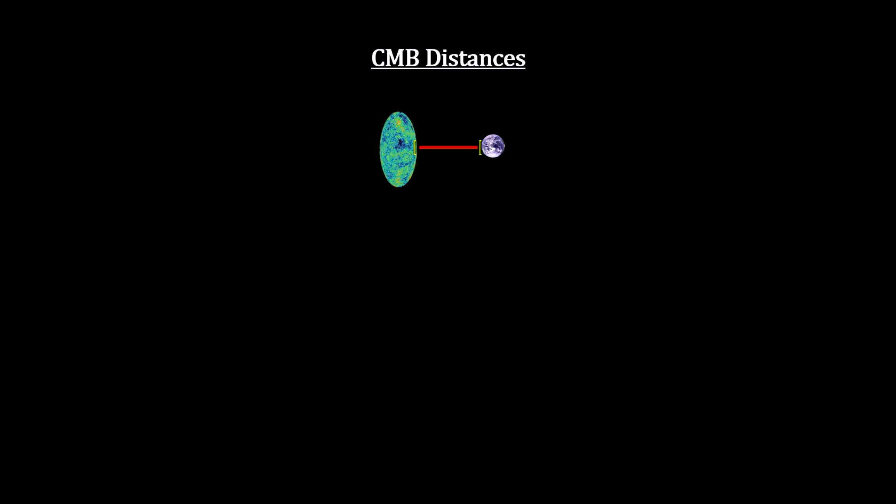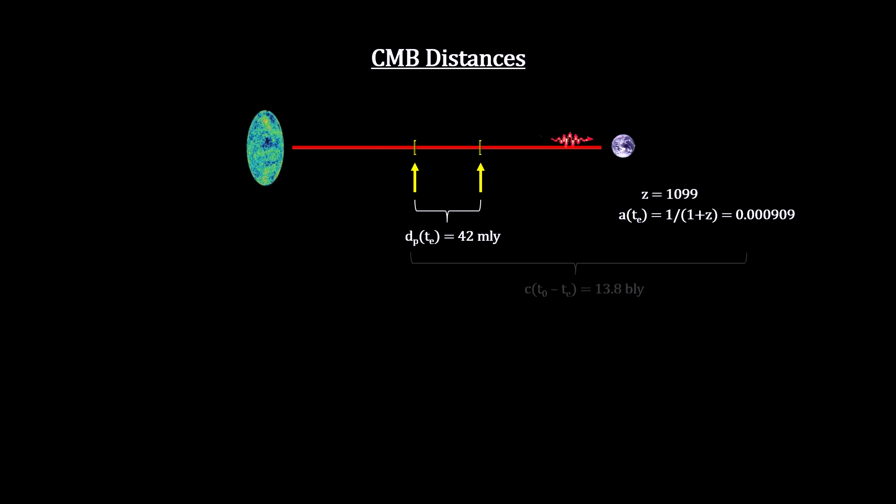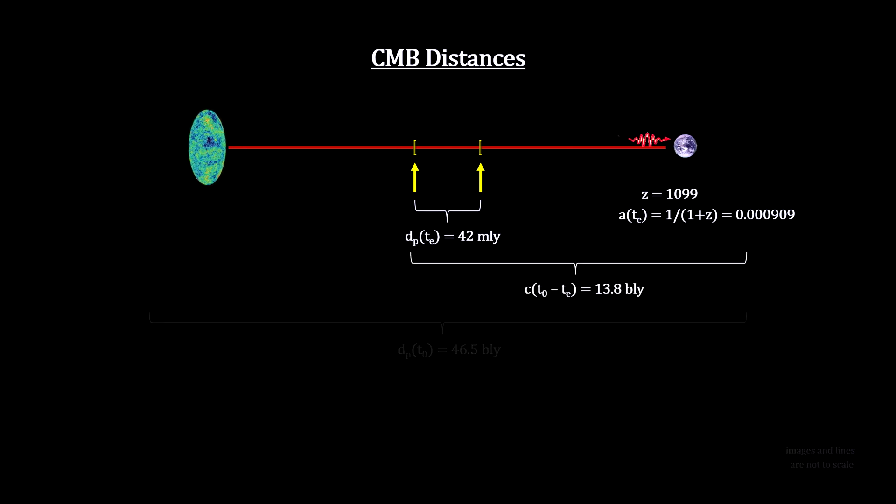The CMB redshift tells us that the light we see now was only 42 million light years away from our location when it was emitted. It traveled for just under 13.8 billion years to reach us and its starting location is now 46.5 billion light years away, making the diameter of the visible universe 93 billion light years.